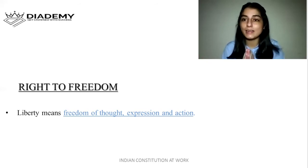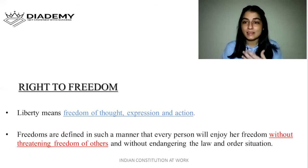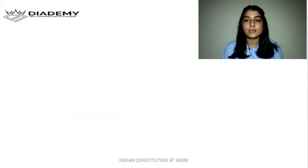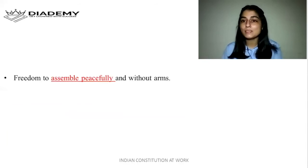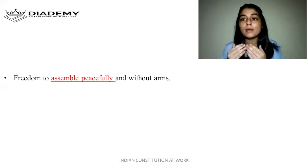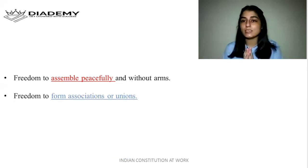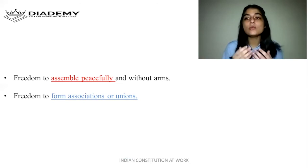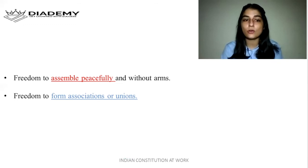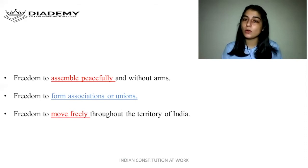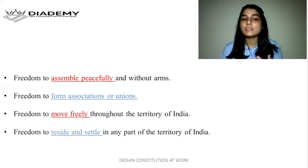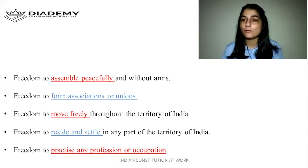The next freedom under Article 19 is freedom to assemble peacefully and without arms — we can assemble but that assembly should be peaceful and without arms. Next is freedom to form associations or unions, such as a Kisan union. Next is freedom to move freely throughout the territory of India. Next is freedom to reside and settle in any part of the territory of India. Next is freedom to practice any profession or occupation.